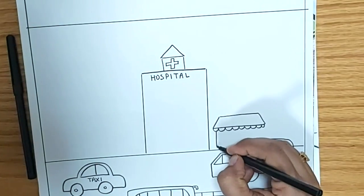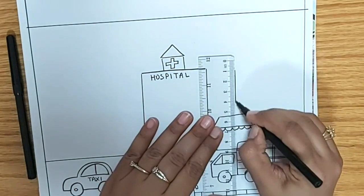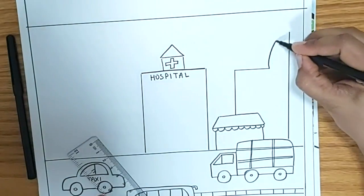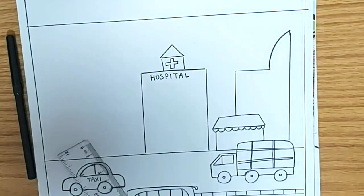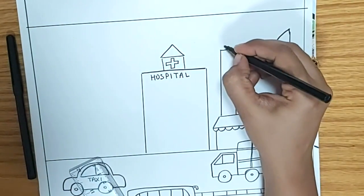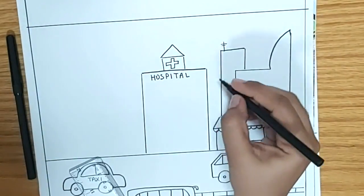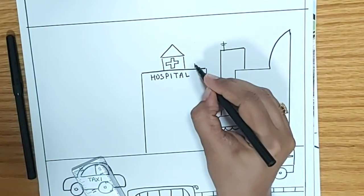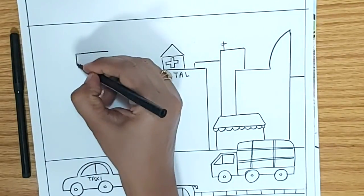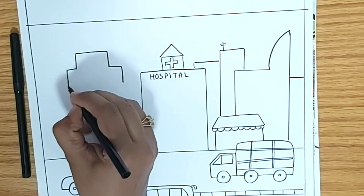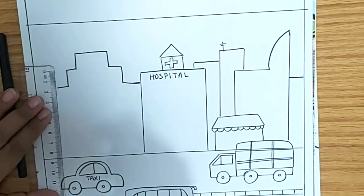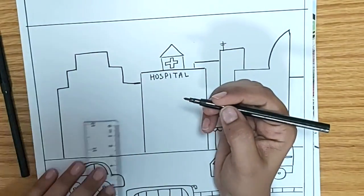You can draw a building of any size or shape, whichever you have seen or is in your city, and make it look attractive or closely resemble the city of your residence. I'm trying to have many buildings one beside the other leaving no gap, because cities are known to be crowded. The buildings are of different unique sizes and shapes, so we are trying to show that here as well. Feel free to use a ruler to make these structures look neat.